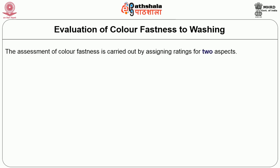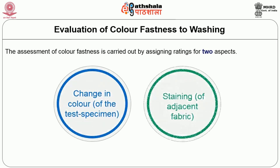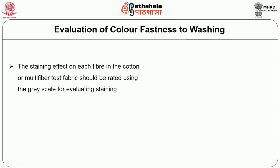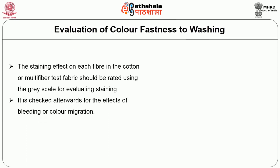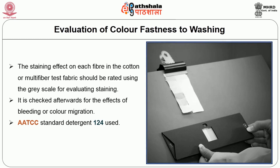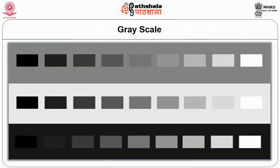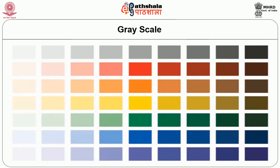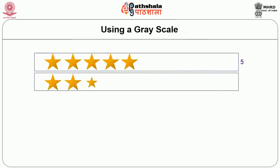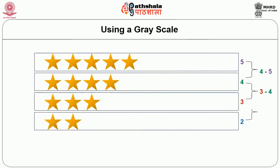Evaluation of color fastness to washing is carried out by assigning a rating for two aspects: change in color of the base fabric, and staining caused by color bleeding onto adjacent fabric. The assessment uses a grayscale with 9 pairs of achromatic neutral gray colored chips, giving a color fastness rating of 5, 4-5, 4, 3-4, 3, 2-3, 2, 1-2, and 1. Class 5 is excellent, 4 is good, 3 is fair, 2 is poor, and 1 is very poor.